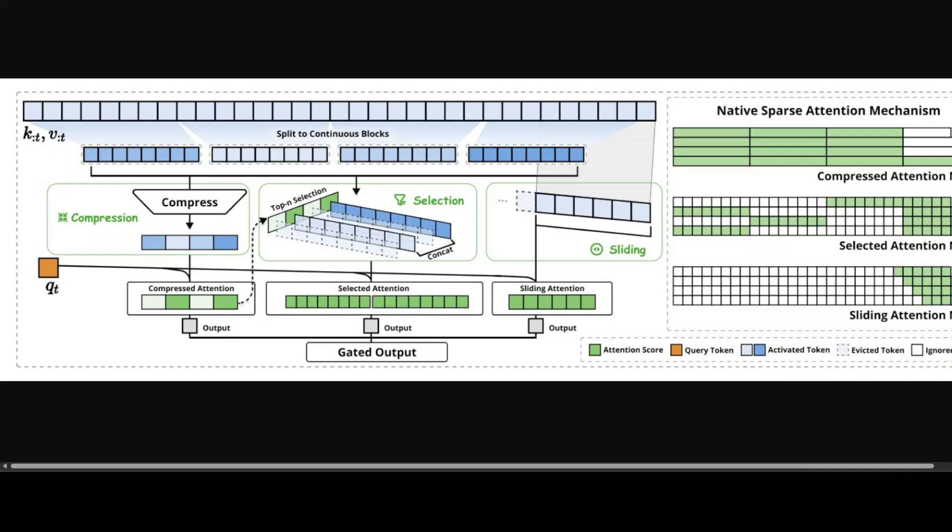On the right-hand side, there is a visualization of different attention patterns produced by each branch. Green areas indicate regions where attention scores need to be computed, while white areas represent regions that can be skipped — and that makes it so efficient.